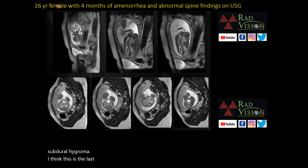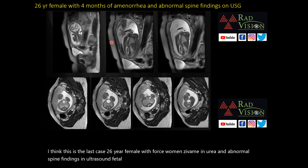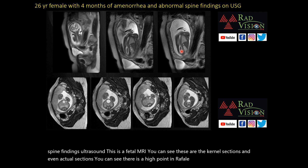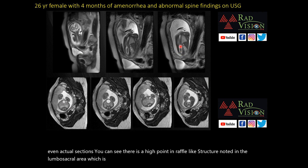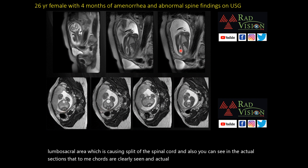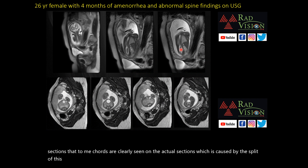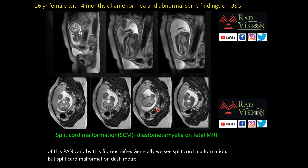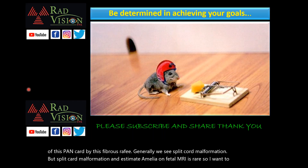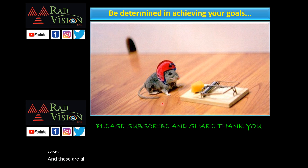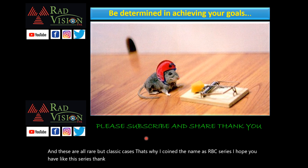The last case: a 26-year female with 4 months of amenorrhea and abnormal spine findings on ultrasound — a fetal MRI. On coronal and axial sections, a hypointense fibrous raphae structure in the lumbosacral area causes splitting of the spinal cord, and two hemicords are clearly seen on axial sections. Split cord malformation and diastematomyelia on fetal MRI is rare. These are all rare but classic cases — that is why I have coined the name RBC series. Thank you all.